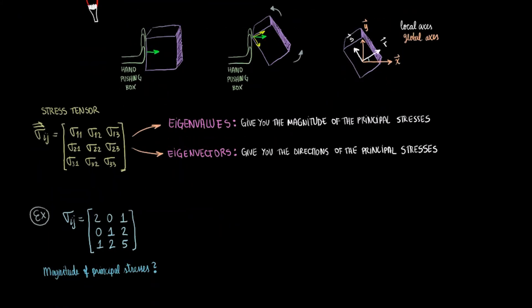Let's do a quick example. In this problem, we were given the stress tensor and we want to find the magnitude of the principal stresses. Let's analyze this tensor first. We can get the normal stresses from the diagonal components which give us 2 pascals, 1 pascal, and 5 pascals as the normal stresses.